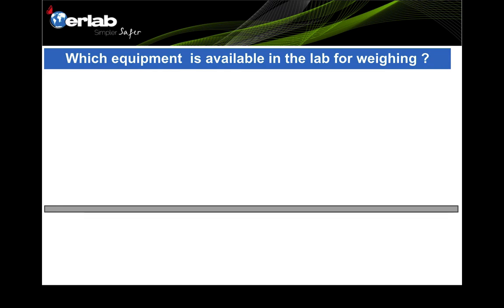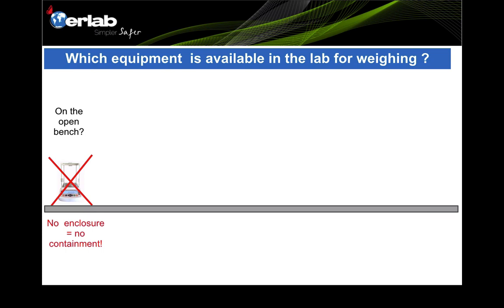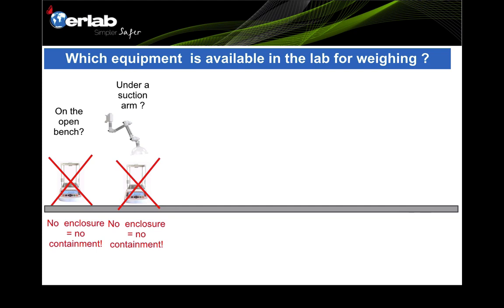Now we're going to see which equipment is available for the laboratory while the operator is doing weighing, especially with toxic hazardous powder. The first very common situation is doing measurements on the open bench — no enclosure, no containment, and no safety. The second common situation is under a suction arm — also no enclosure, no containment. The powder can escape from the balance and be inhaled by operators, so there is no safety either.